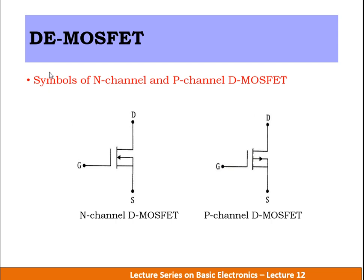Let us discuss the symbols of N-channel and P-channel DE MOSFET. The N-channel DE MOSFET symbol has gate, drain, and source terminals, with substrate and source shorted together. Note the arrow direction. The P-channel DE MOSFET similarly has gate, drain, and source terminals with the substrate combined.